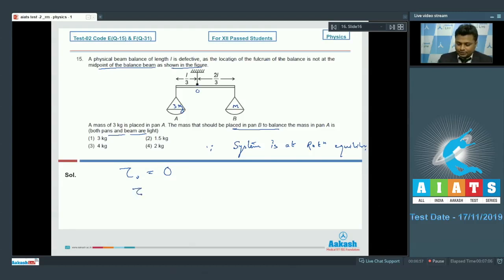So therefore we can write torque due to A should be equal to torque due to B. Torque due to A, that is 3g weight or force multiplied by l by 3, should be equal to mg multiplied by 2l by 3. g g cancel out, l l cancel out, 3 3 cancel out. The value of m will be equal to 3 divided by 2 kilogram, or m is equal to 1.5 kg.